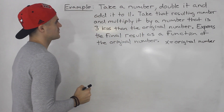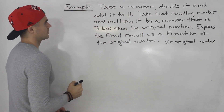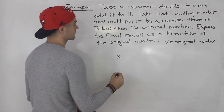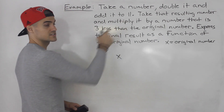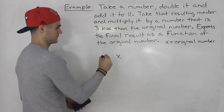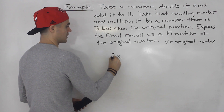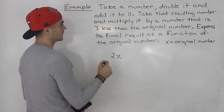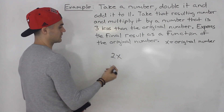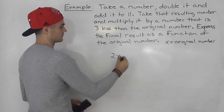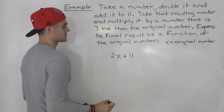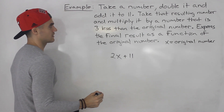So what are we going to be doing here? We're going to take a number, x, and we're going to double it — multiply by two — and then we're going to add it to 11. So we get 2x plus 11.